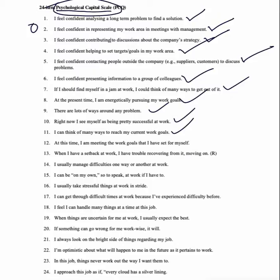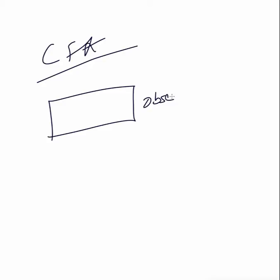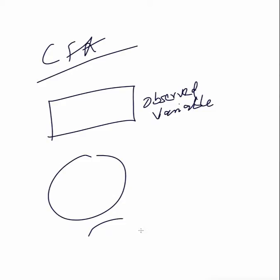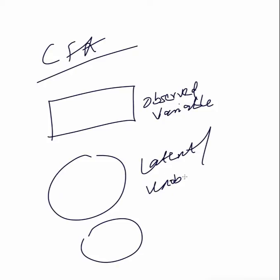In CFA — Confirmatory Factor Analysis — we use a rectangle to represent the observed variables, which are the questionnaire questions. A circle or oval is used to represent the latent or unobserved variable.